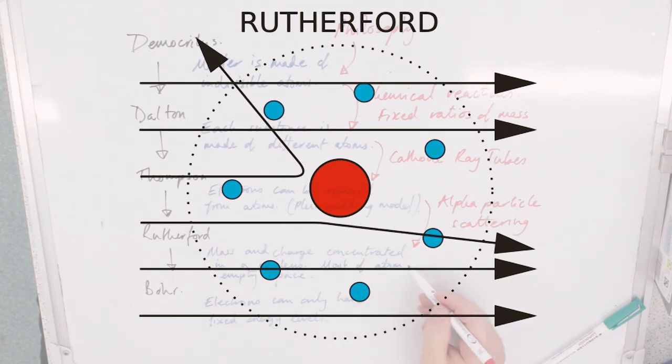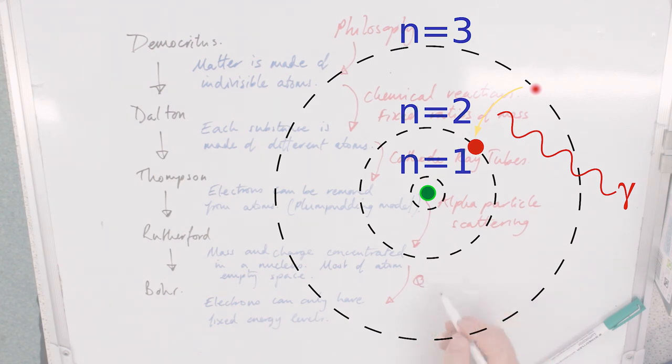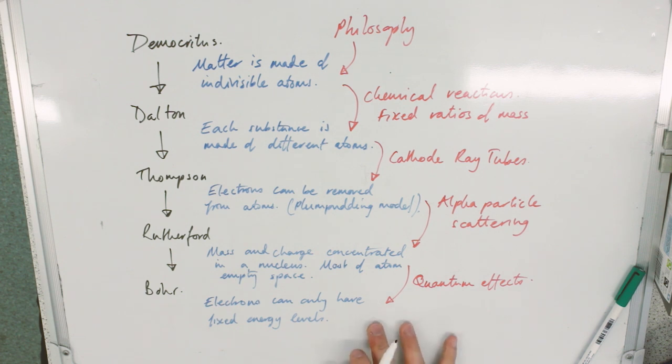How did we get from this model to this one? Electrons can only have fixed energy levels. Well, the model never worked theoretically, but also the main evidence were quantum effects. So this was the start of quantum physics, which gave us the Bohr model.